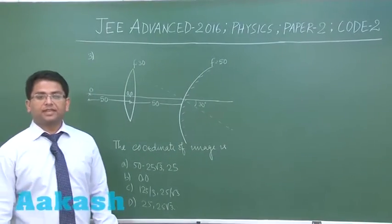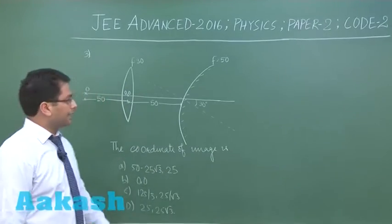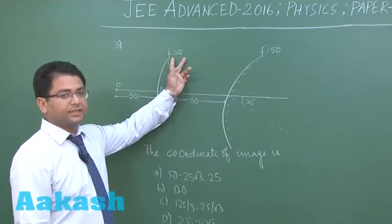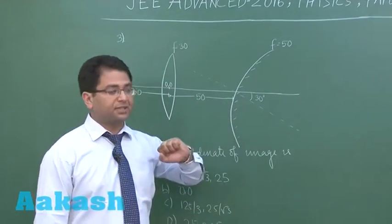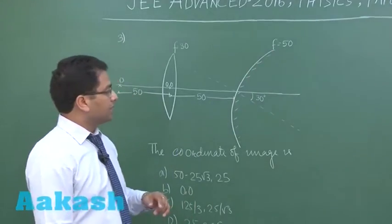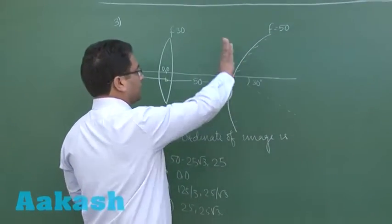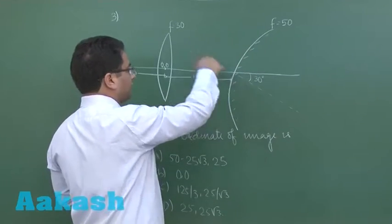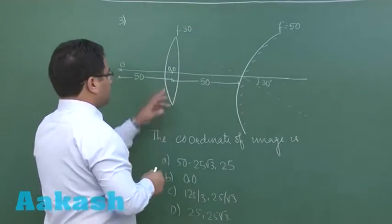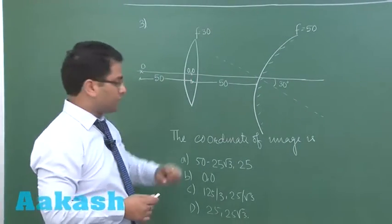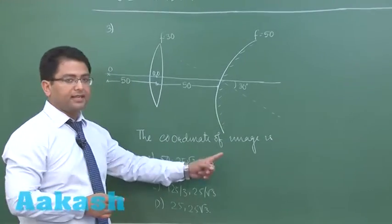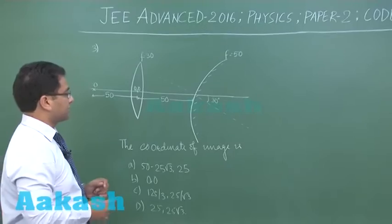Let us go for question number three from Ray optics. There is a convex lens of focal length 30 cm and a convex mirror of focal length 50 cm, but the convex mirror has been tilted by 30 degrees. This is its principal axis. The optical center of the convex lens is taken as the origin, and we need to find the coordinates of the image with respect to this origin.